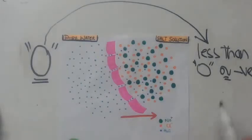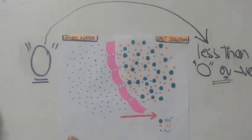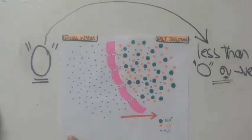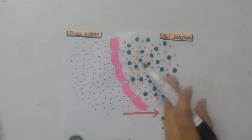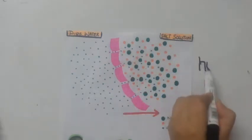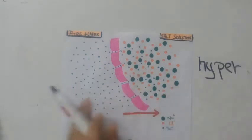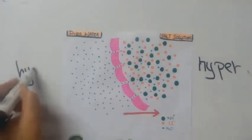Osmosis of water will occur from zero osmotic potential, which is high osmotic potential, towards less than zero or negative osmotic potential, which is low osmotic potential. In the case of isotonic solutions, when two solutions have the same concentration of solute, the osmotic potential difference will be zero and there will be no net movement of water. Although there will be equal movement of water on both sides, there will be no osmosis in isotonic solutions.